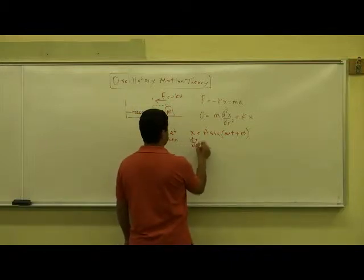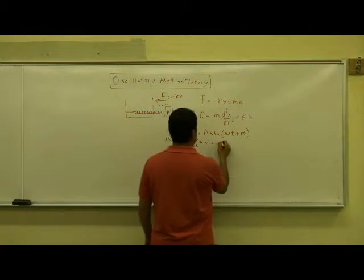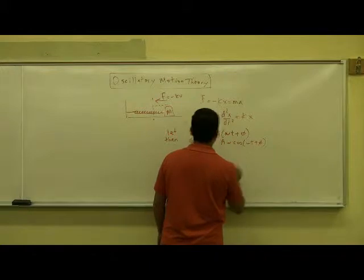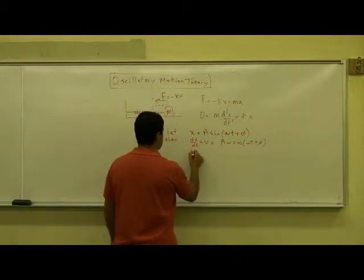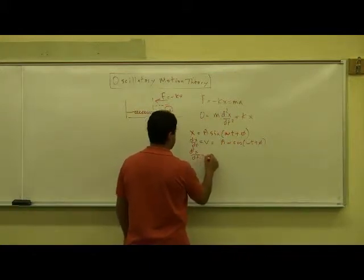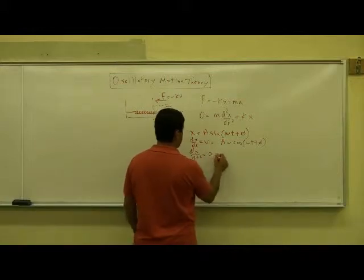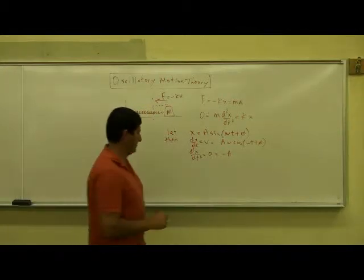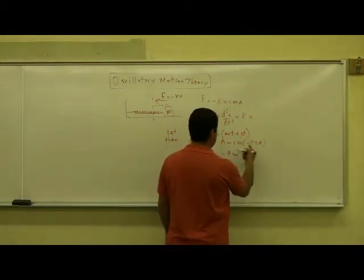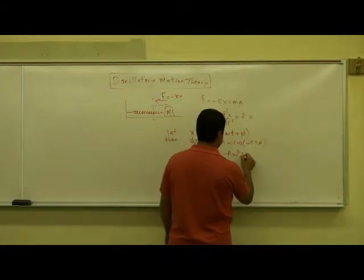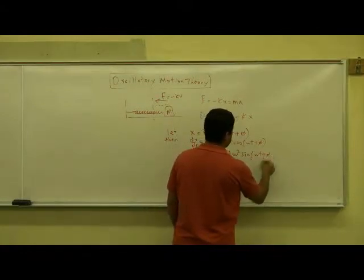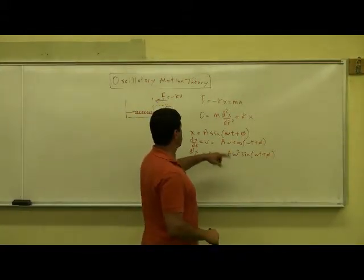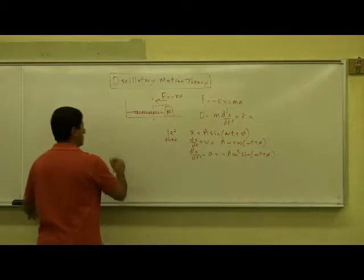The derivative of x with respect to t — which is the velocity of the block — is A·ω·cosine(ωt + φ). The derivative of that gives the acceleration: the derivative of cosine is negative sine, so you get negative A·ω² times sine. To check whether this solves our differential equation, we substitute it back into the equation.